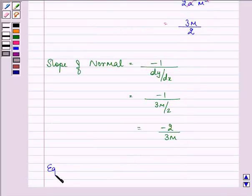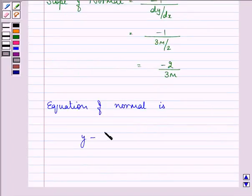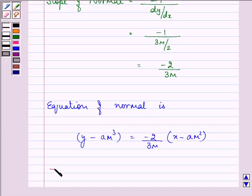Now, we can easily find out equation of the normal. The equation of normal is y minus y₁. Now, here in the question, we are given y₁ as am³ equal to slope of the normal times (x minus x₁). Now, solving it very carefully, we have 3my minus 3am⁴ equal to minus 2x plus 2am².